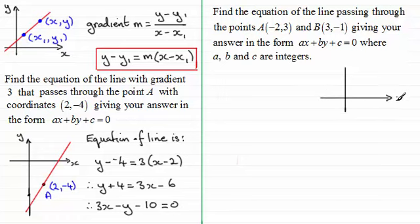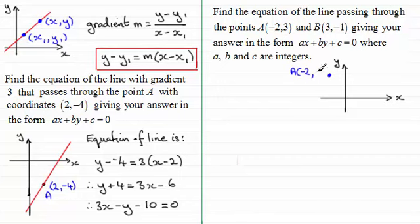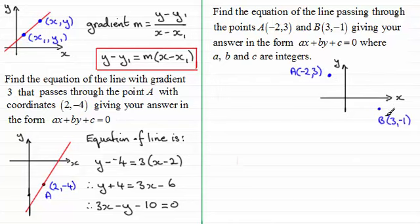Draw axes x and y. Put on points a and b: a is at (-2, 3), so minus 2 across and 3 up — label that as a with coordinates (-2, 3). Then point b with coordinates (3, -1): 3 across and 1 down — that's b with coordinates (3, -1). We need the line between them. What we haven't got is the gradient m, so we're going to need to find that first.